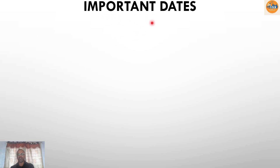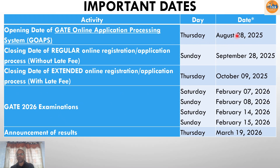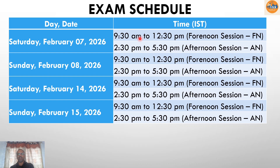Now the important dates: the portal for online application opened on August 28th and the last date without fee is September 28th. After September 28th, we can apply up to October 9th with a late fee. GATE 2026 will be held on four days — February 7th, 8th, 14th and 15th. Results will be announced on March 19th. These dates may be liable to change. The exam is conducted in two sessions: forenoon 9:30 to 12:30, and afternoon 2:30 to 5:30. We have the option of opting for two different papers on different dates and slots, with the exam center possibly in the same town or city.